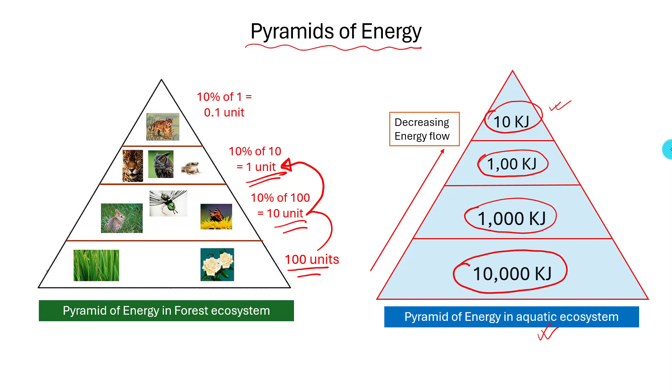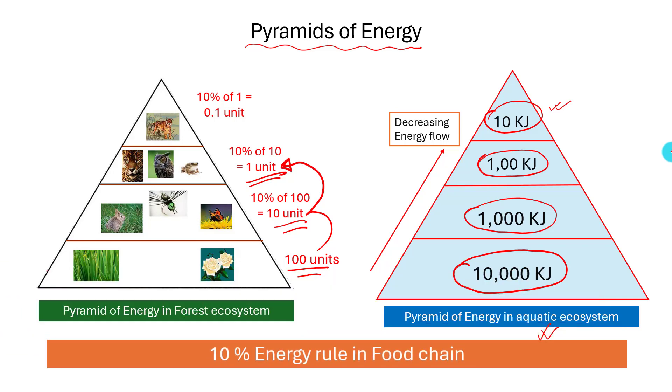This is known as the 10% energy rule in the food chain. That means only 10% of the energy is transferred to the next higher trophic level and 90% is lost.